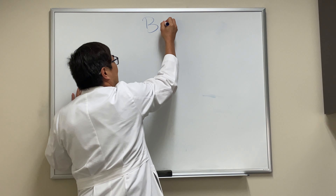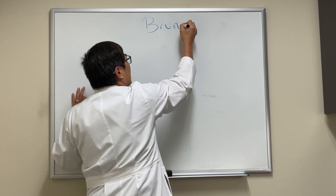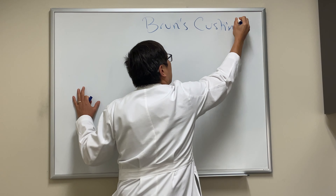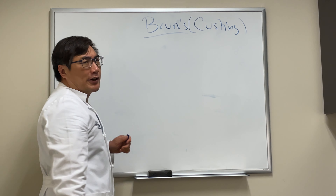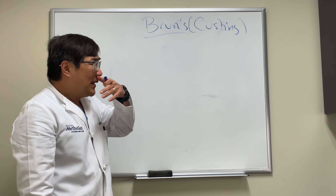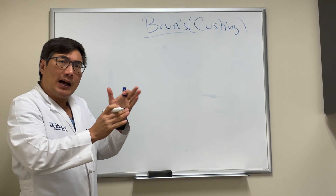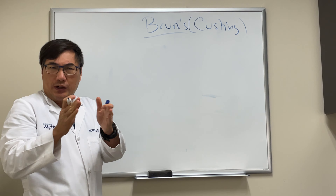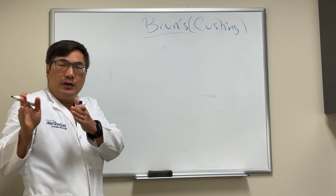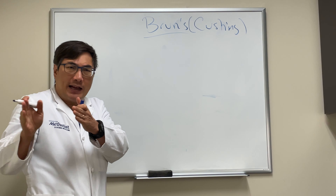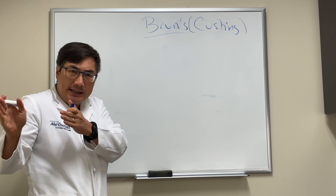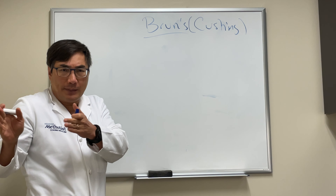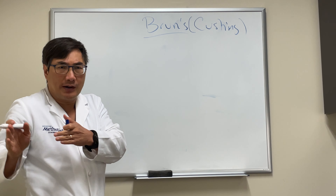Someone asked about the Bruns-Cushing nystagmus, sometimes just called Bruns nystagmus. The Bruns-Cushing nystagmus is a combination of gaze-evoked nystagmus in one direction, which is a smaller amplitude, higher frequency nystagmus on gaze to the right — a horizontal jerk-beating nystagmus to the right.